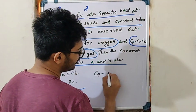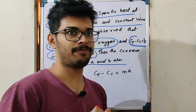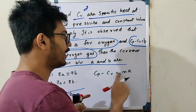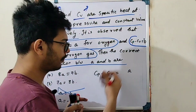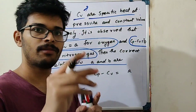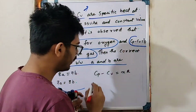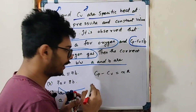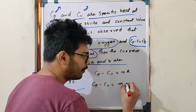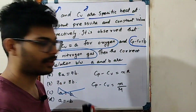Let's view this from the molar perspective. CP minus CV is equal to nR. For 1 mole, CP minus CV equals R. For n moles, CP minus CV equals nR. The number of moles n equals given mass divided by molecular mass.